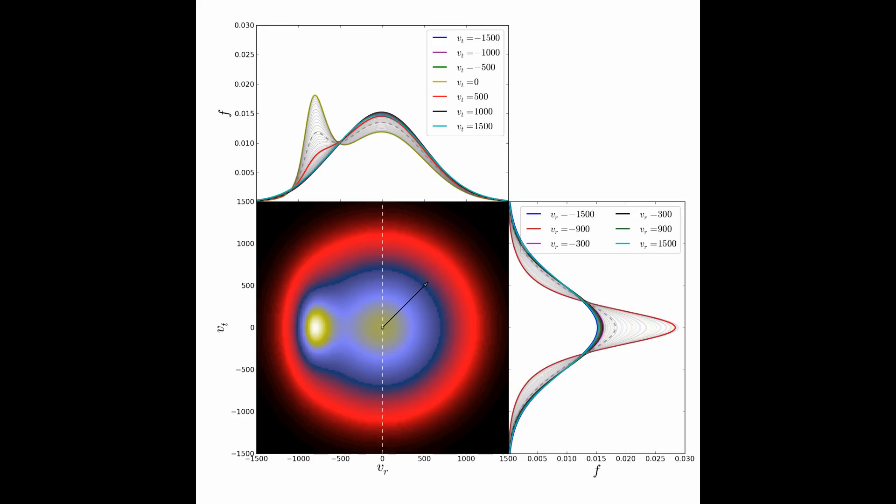The virialized component at small scales can be described by a 2D Gaussian with zero mean and equal dispersions in the two axes.